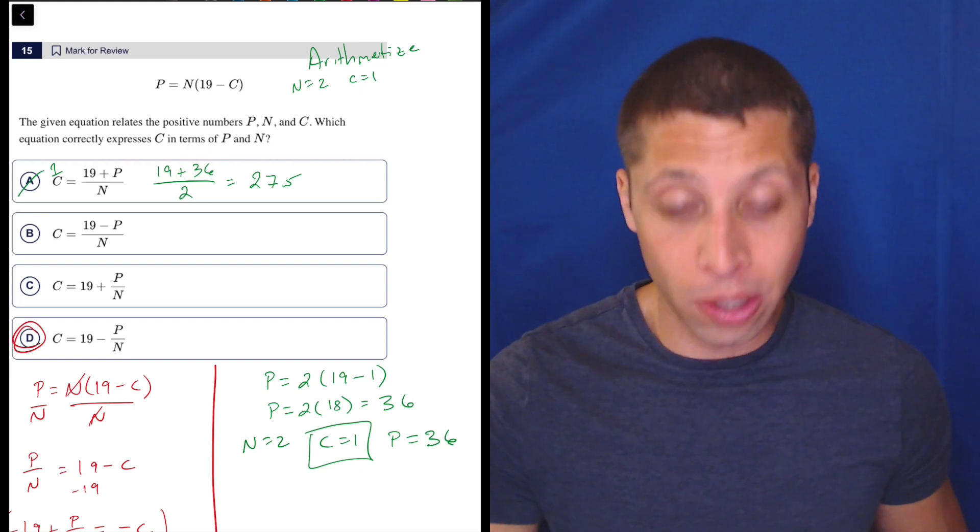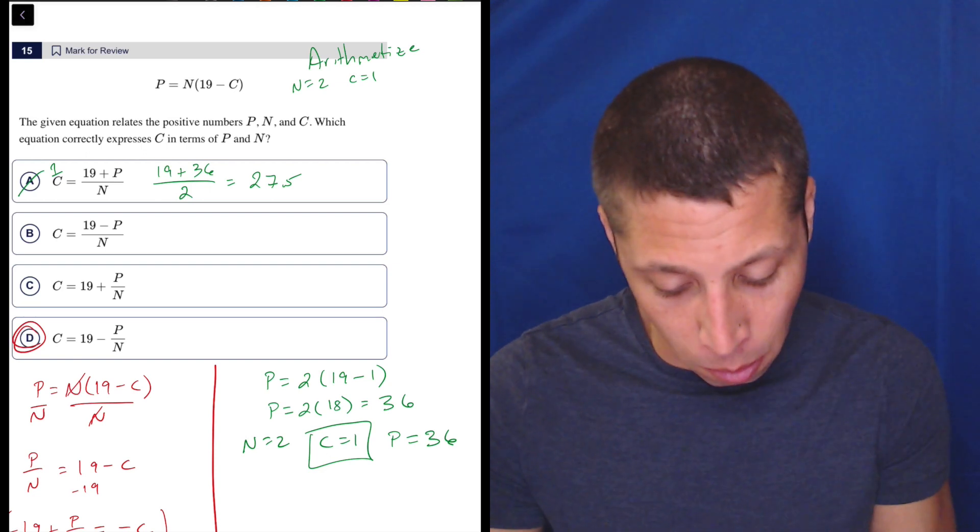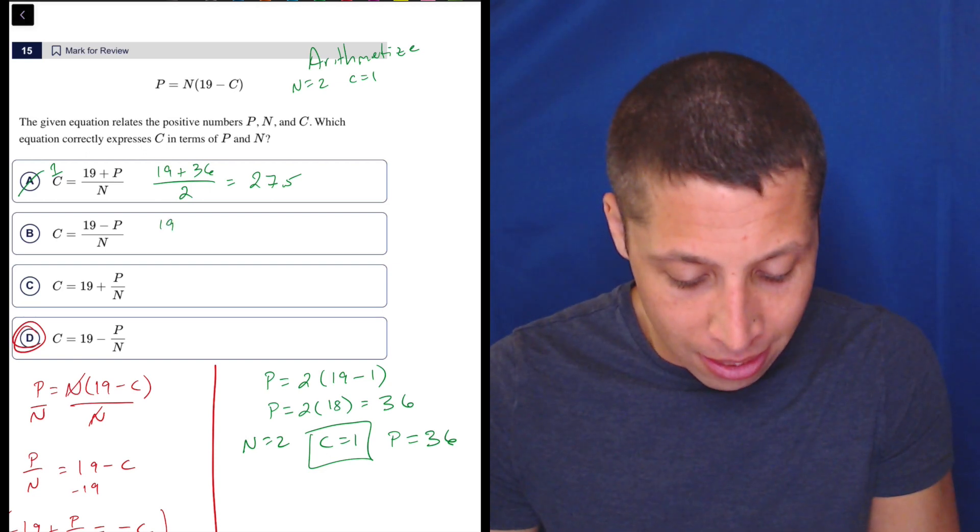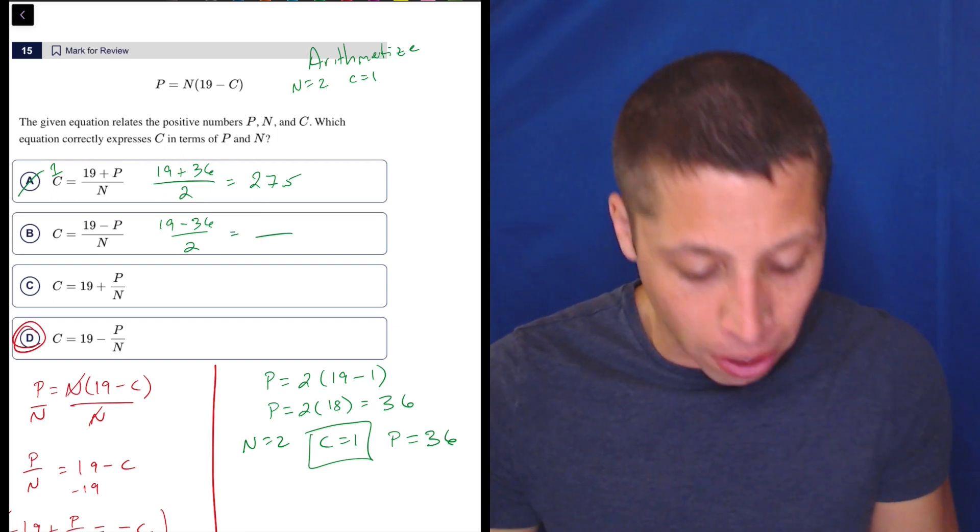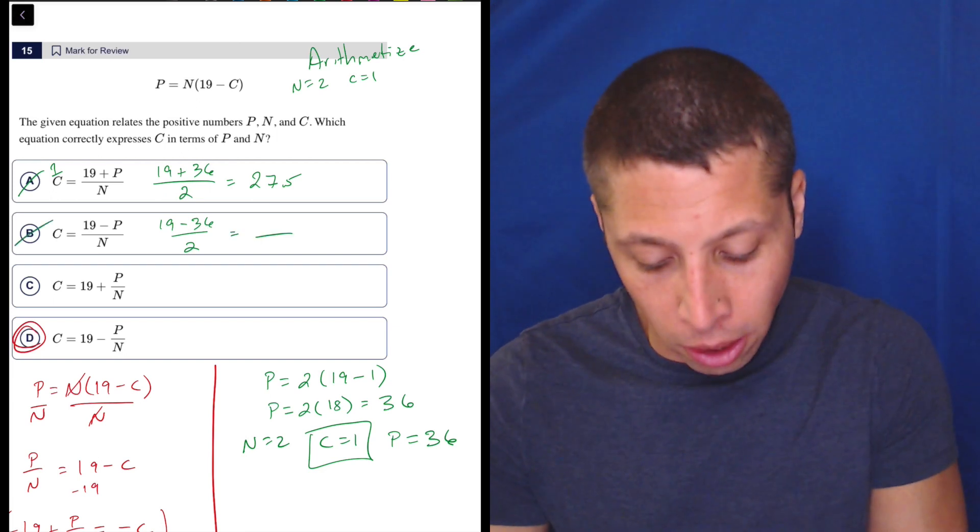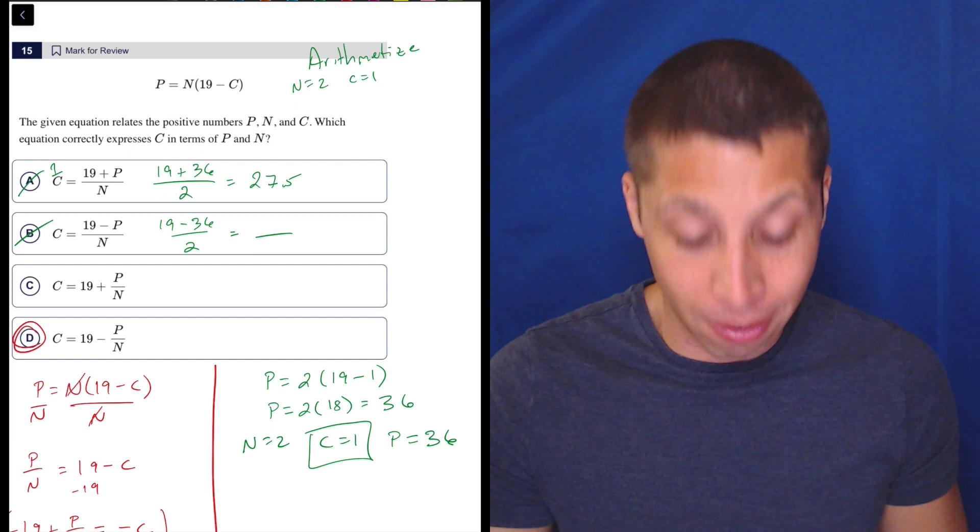So all you have to do is check all the answer choices, and eventually one will work. Let's see what we get with choice B. That's going to be 19 minus 36 over two. Well, that's a negative number. I don't even need to do it to know that's not going to work because 19 minus 36 is negative. So it doesn't work.